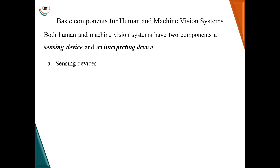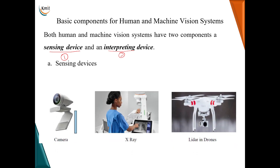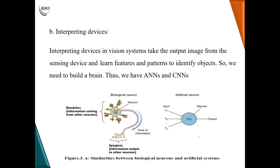We will now talk about the basic components of human and machine vision systems. We have two components: the sensing device and the interpreting device. Sensing devices include cameras, x-rays, and LiDARs in drones — where LIDAR stands for Light Detection and Ranging, used for measuring ranges using light pulses. For interpreting devices, we build an artificial brain using artificial neural networks and convolutional neural networks — essentially replacing the human brain with an artificial brain. The similarities between biological and artificial neurons are shown in the figure, as the flow of information is the same in both.